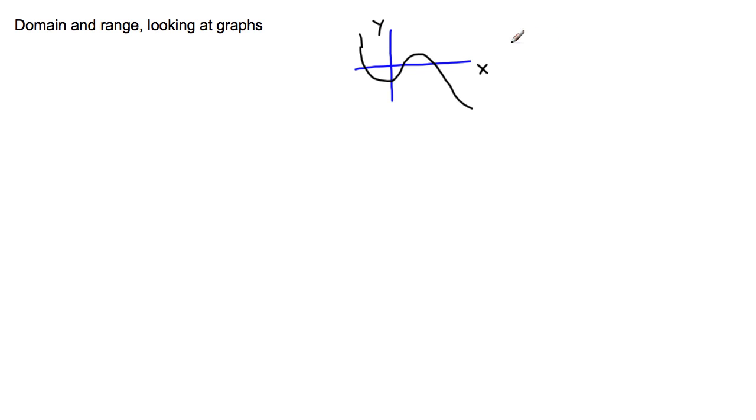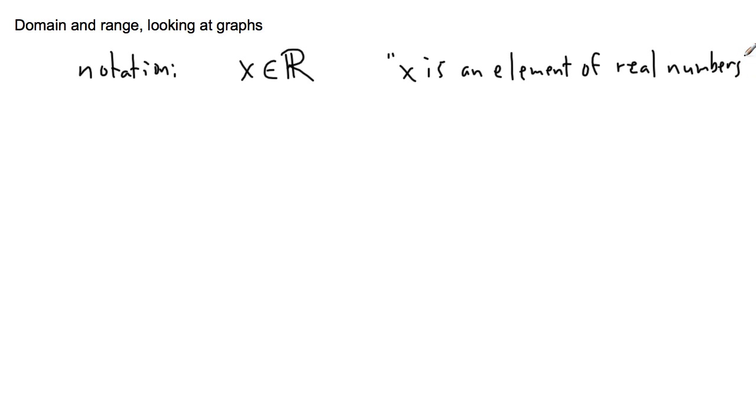Now before we begin, I think it's important to look at some notation. So maybe I'll just erase this little one right here. So the very first thing to look at is maybe some of the notation. So what we might do is, we might say, for example, this is an answer. We might say that the domain is like this. This x with this weird looking e thing, and then this r. What this means is, x is an element of real numbers.